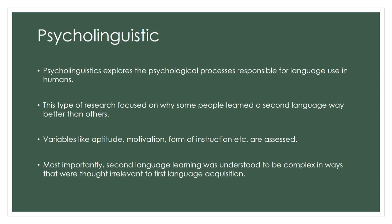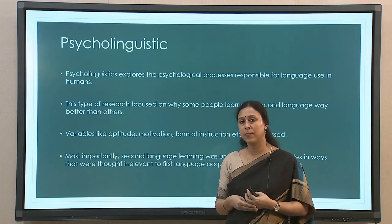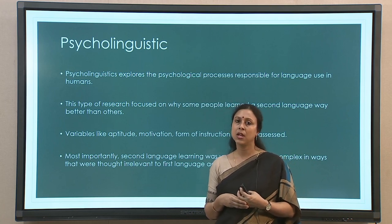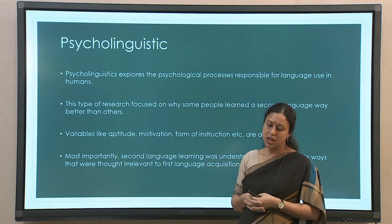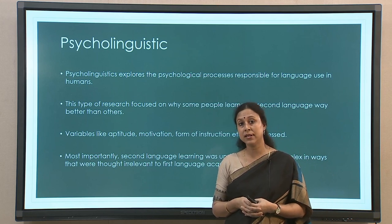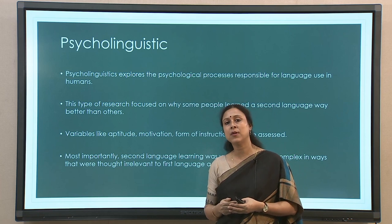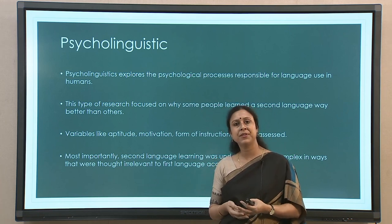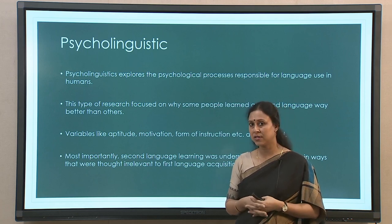We will now move on to our primary area of interest, which is the psycholinguistic way of looking at the same process. As stated earlier, psycholinguistics explores the psychological processes responsible for language use in humans — what mental processes are part and parcel of language use, including language learning, comprehension, production, and so on. This area of research focuses on why some people learn a second language better than others, and you need to take into account variables like motivation, aptitude, type of input, and all kinds of forms of instruction. How various non-linguistic variables interact with the learner and hence influence the outcome is a key concern.